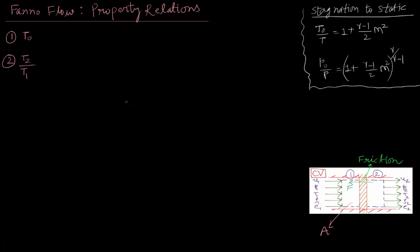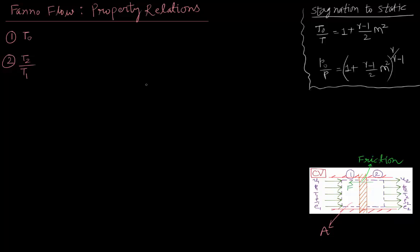Now we will derive property relations for Fanno flow. First, we will consider the effect of Fanno flow on stagnation temperature T0. We know that Fanno flow is a flow with friction with negligible heat transfer, and hence we can consider the process as an adiabatic process. In an adiabatic process, stagnation temperature does not change, and hence in Fanno flow T0 will remain constant.